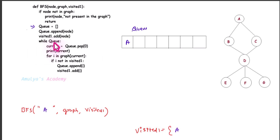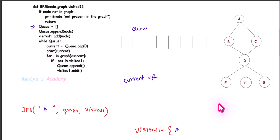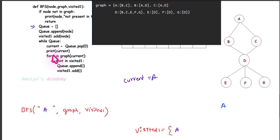Next, while q — if q is empty it becomes false, but q is not empty since 'a' is present, so the condition is true and it executes the while loop body. current = q.pop(0) — it pops the element from q, so current becomes 'a'. Then print current — 'a' is printed to the screen. Next, for i in graph[current] — graph[current] is graph['a'], which gives the adjacent nodes of 'a', that is 'b' and 'c'.